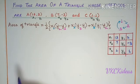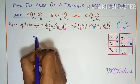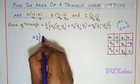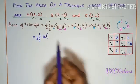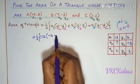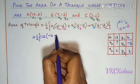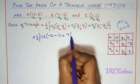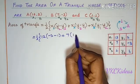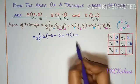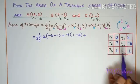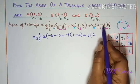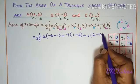Now, it is time to substitute. We shall start: half into x1—in the place of x1 we will be writing 12, y2 is -3, minus y3 is 1, plus x2 is 7, y3 is 1 minus y1 is 2, plus x3 is 1, y1 is 2 minus y2, minus y2 is -3.